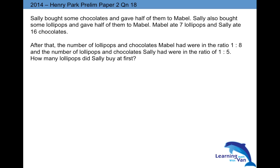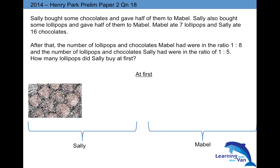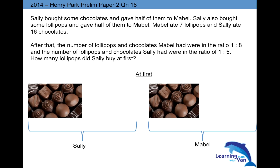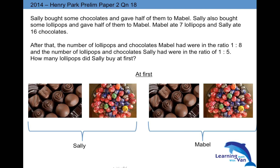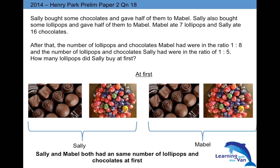At first, Sally bought some chocolates and gave half to Mabel. She also bought some lollipops and gave half of them to Mabel. So what does that mean? Basically, Sally and Mabel both had the same number of lollipops and chocolates at first. Bear in mind, because this is how we are going to convert the parts to units and use that information to solve the units.